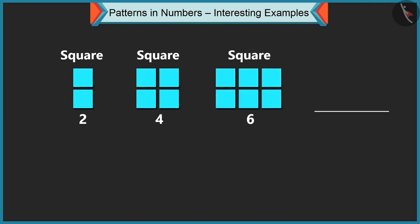Children, can you tell me how to move ahead with this pattern? In this pattern, the numbers of squares are increasing. Yes, Chutki. Initially, this pattern had two squares.